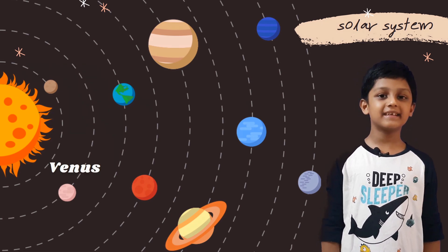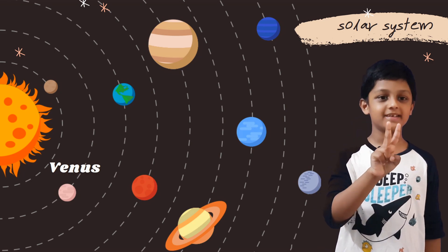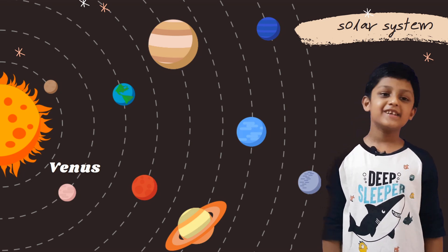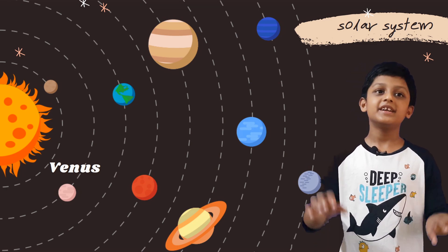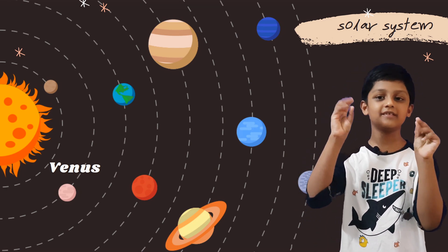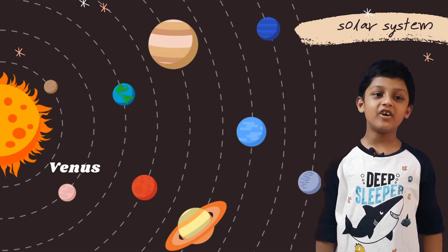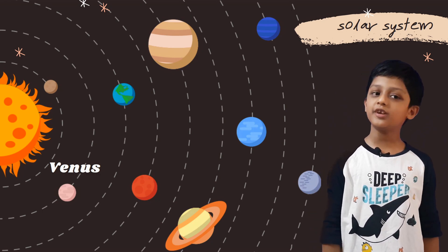Venus, it is the second planet from the sun. It is almost same size as Earth. It is a twinkling star. It is the hottest planet on the solar system.